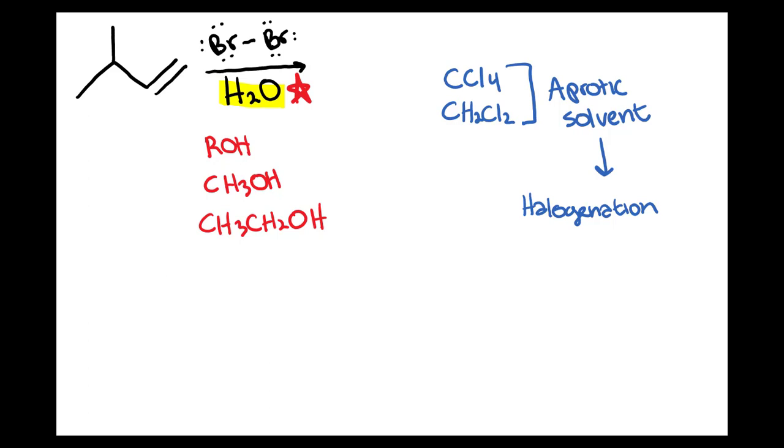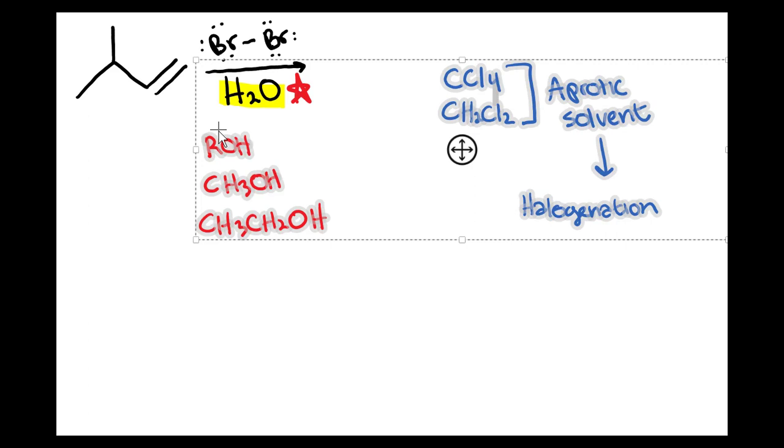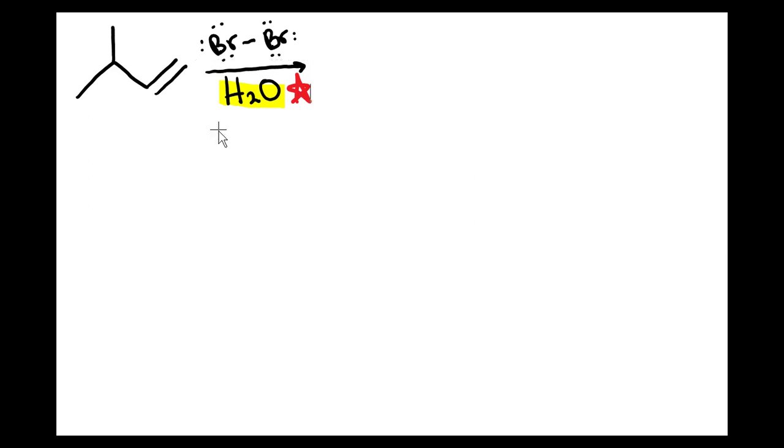So now that we know we're using a protic solvent, we can proceed with this reaction. Remember water is an example of a protic solvent. The first step here is the double bond is going to attack one of the bromines. Then the electrons between the two bromine atoms are going to go to the second bromine.